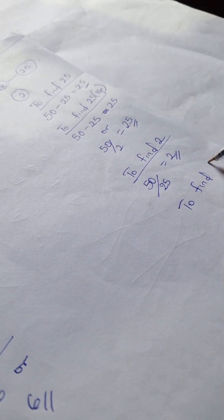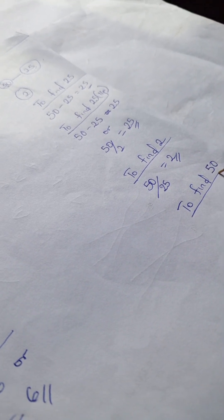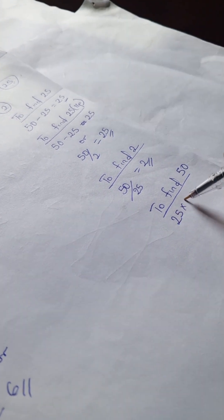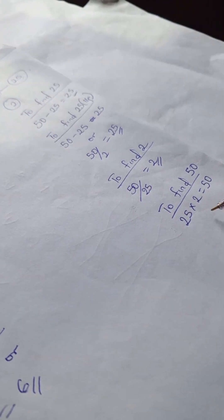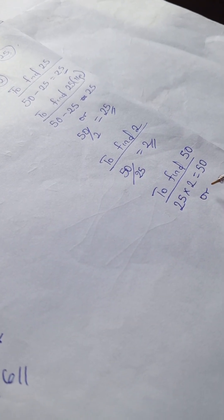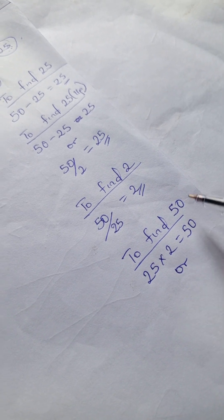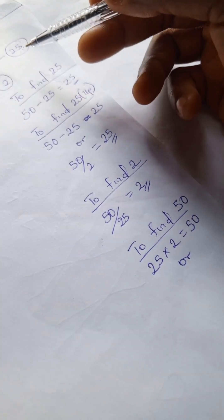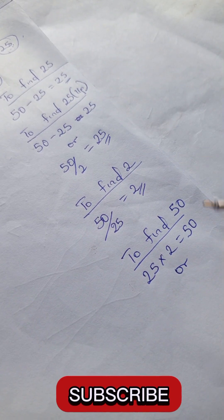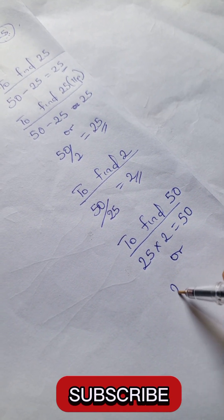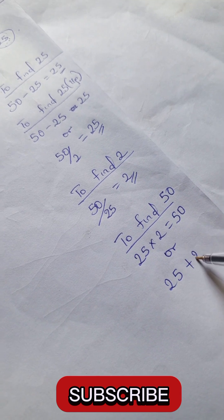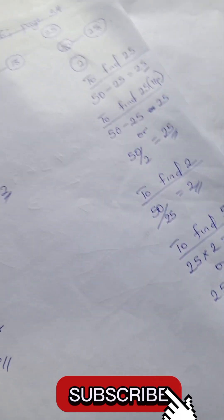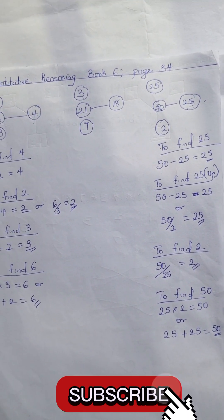To find 50, we can have 25 times 2, that gives us 50. Or to get 50 the other way round, you have this plus this, so that's 25 plus 25, that gives us 50.